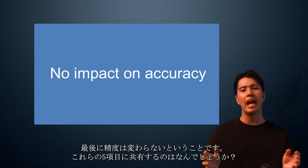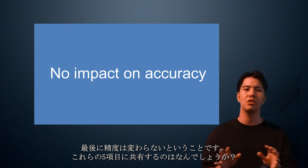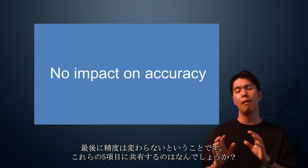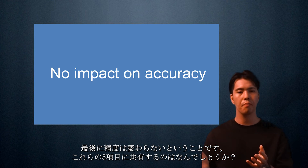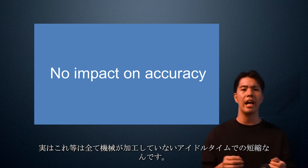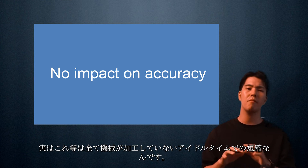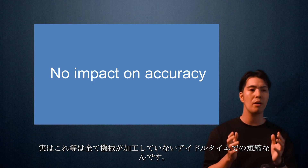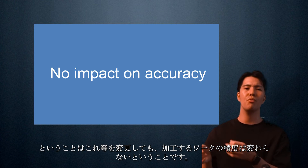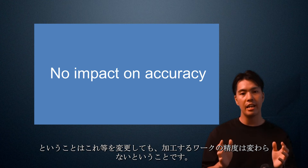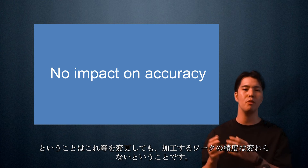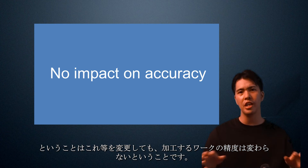Lastly, accuracy is no different. What do these five items have in common? They are all reductions in idle time when the machine is not machining. This means even if you change these items, the accuracy of the workpiece to be machined will not change.